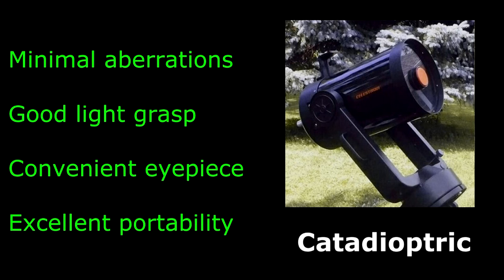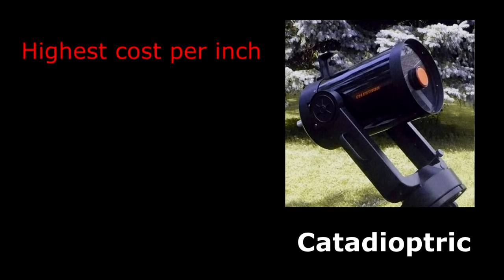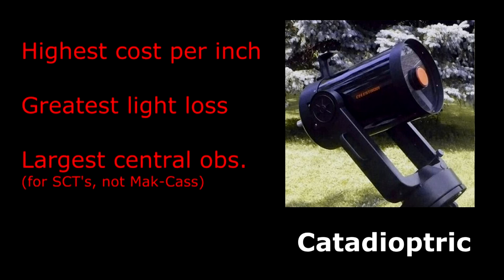On the downside though, cats are the most expensive per inch of aperture, have the greatest amount of light loss due to multiple lenses and mirrors, often have the largest central obstruction. Tube currents due to sealed systems can cause poor images before fully cooled to outdoor temperatures.